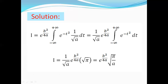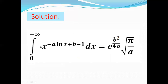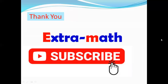This is a Gaussian integral and it equals √π. Therefore I equals 1/√a multiplied by e to the power b²/(4a) multiplied by √π. Therefore we get the integral from 0 to plus infinity of x to the power minus a·ln(x) + b minus 1, dx equals e to the power b²/(4a) multiplied by √(π/a). Thank you for watching.